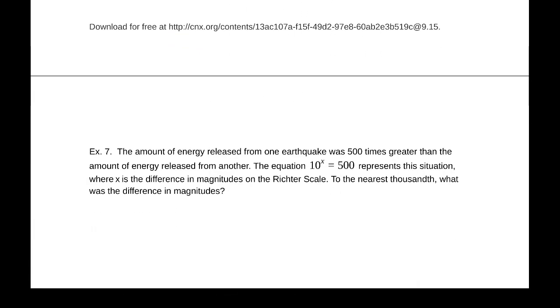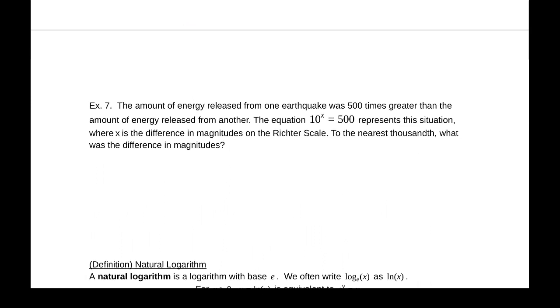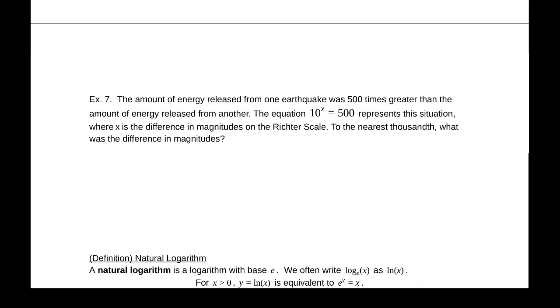Example 7. Back to our opening question. The amount of energy released from one earthquake was 500 times greater than the amount of energy released from another. The equation 10 to the x equals 500 represents the situation where x is the difference in magnitudes on the Richter scale. To the nearest thousandth, what was the difference in magnitudes?